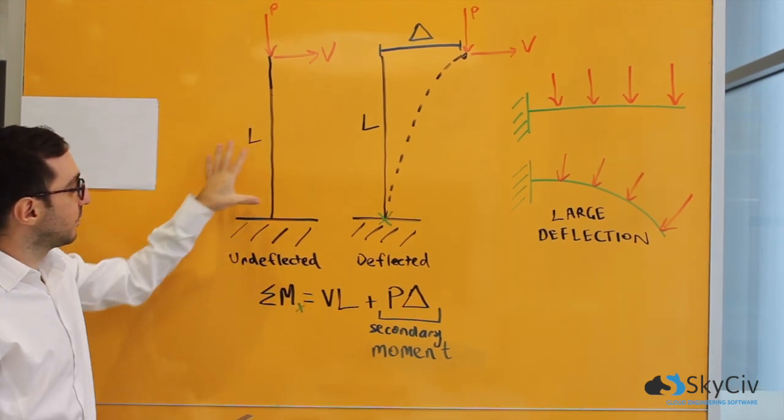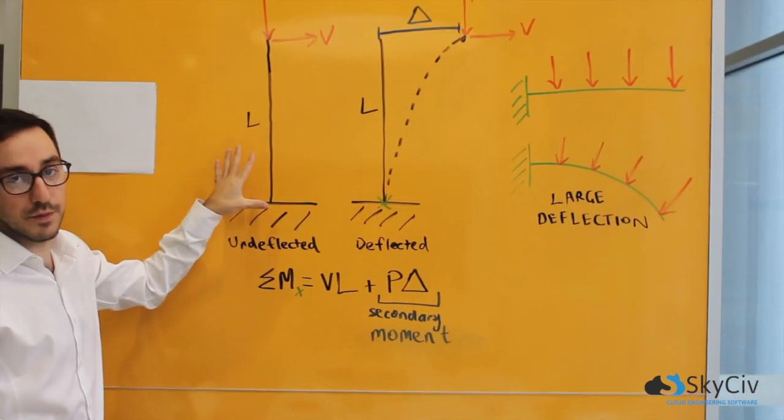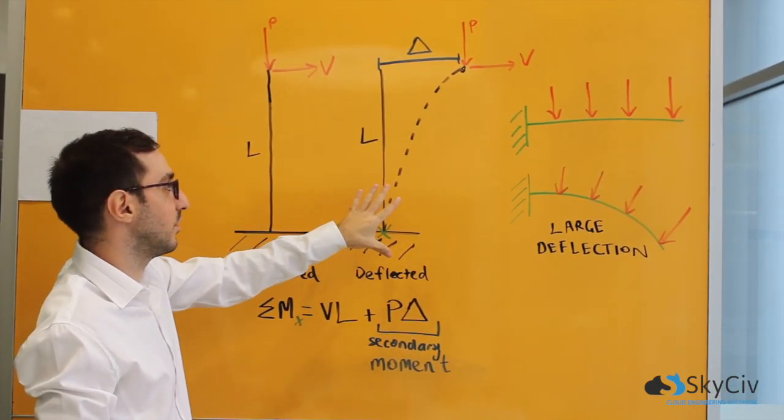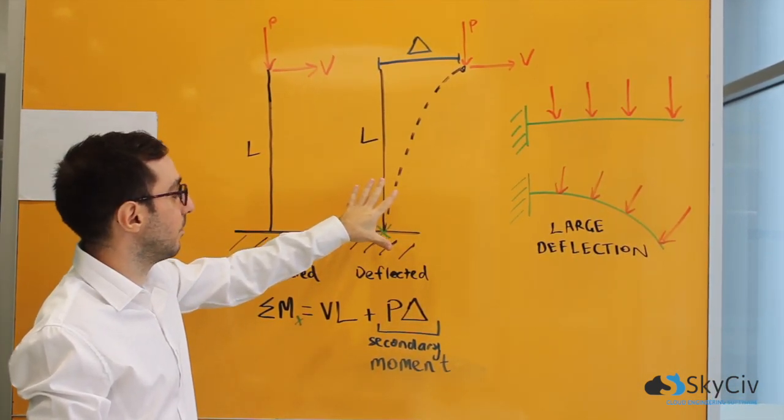On the left we've got the undeformed position of our column and on the right we've got the deformed or deflected position of the column.